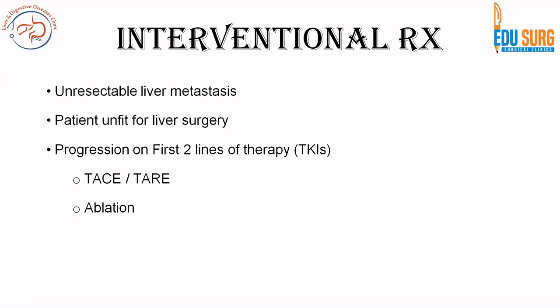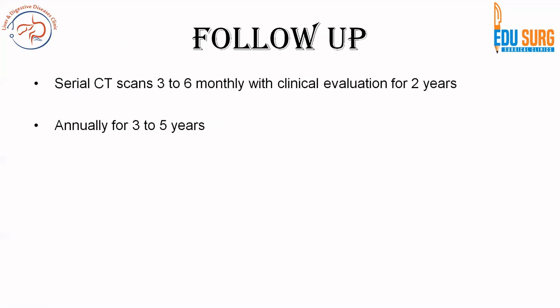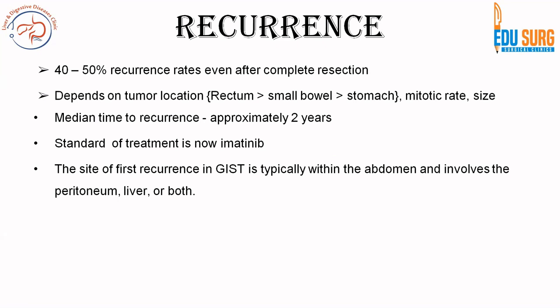Follow-up is usually three to six monthly scans and clinical evaluation for the first two years, then annually for three to five years. Recurrence rates are 40 to 50%, usually due to undetected tumour rupture or spillage. Rectum has the worst prognosis, followed by small bowel, then stomach. High mitotic count and larger tumour size lead to earlier recurrence. Standard treatment for recurrence is imatinib. The site of first recurrence is typically in the abdomen, involving the peritoneum, liver, or both.